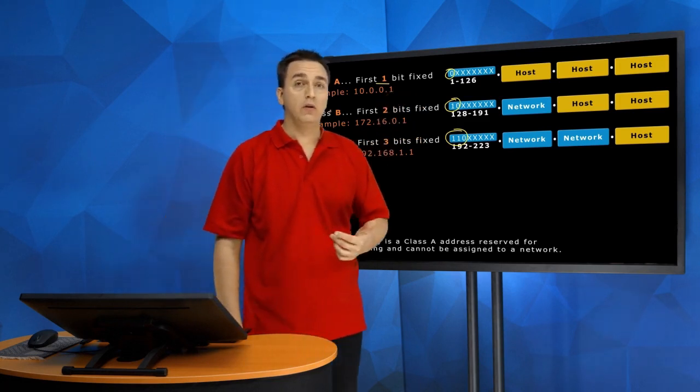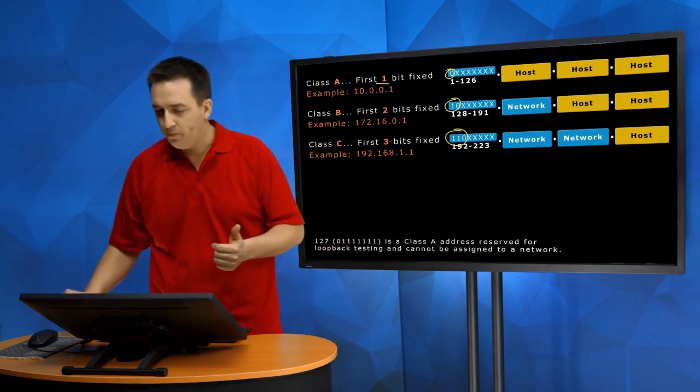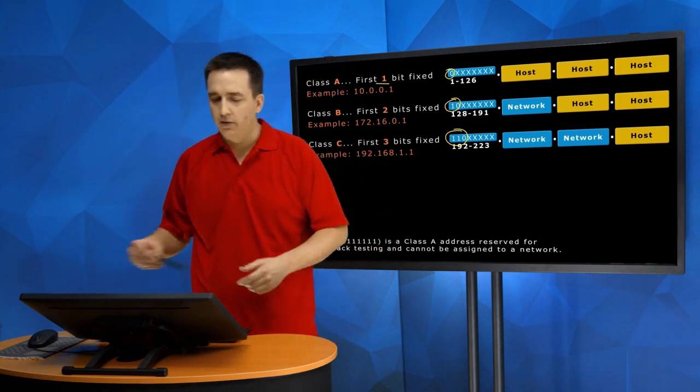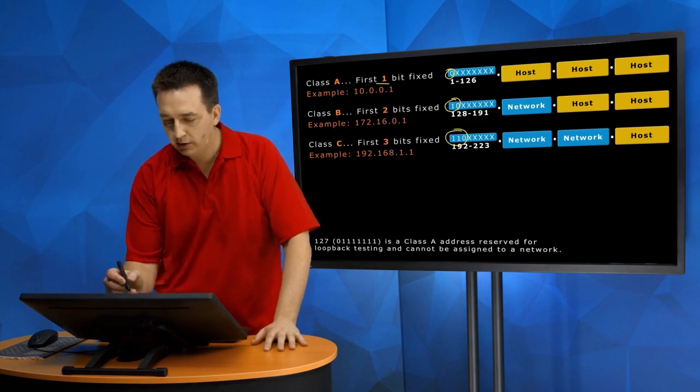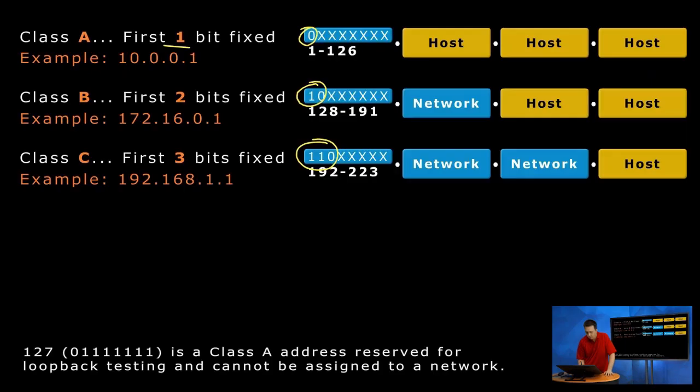Now how does that work? Why does that work? Well, I want you to focus right now on the Class A option. The Class A option says it starts with zero. So if we have a value of zero in the first bit position of the first octet, and then we had zero, zero, zero, zero, zero, zero.